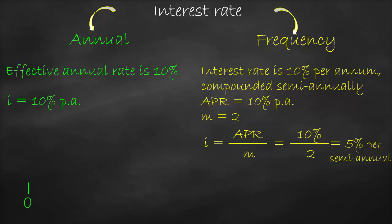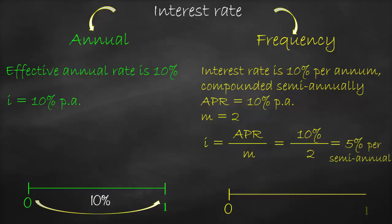If we draw a timeline for the annual rate, from year zero to year one we receive 10%. For the semi-annual frequency, within one year we have two half-year periods: in the first half we receive 5%, and in the second half we receive another 5% — a total of 10%.